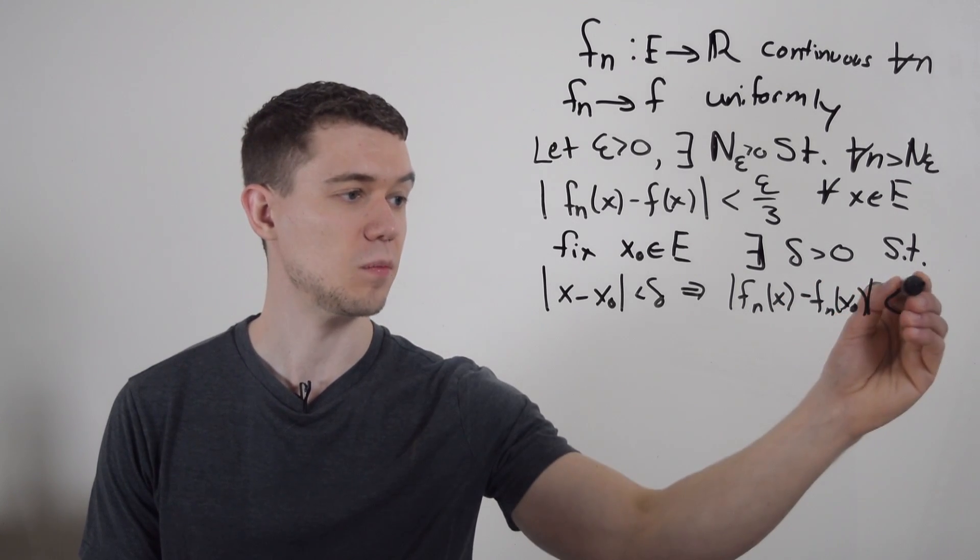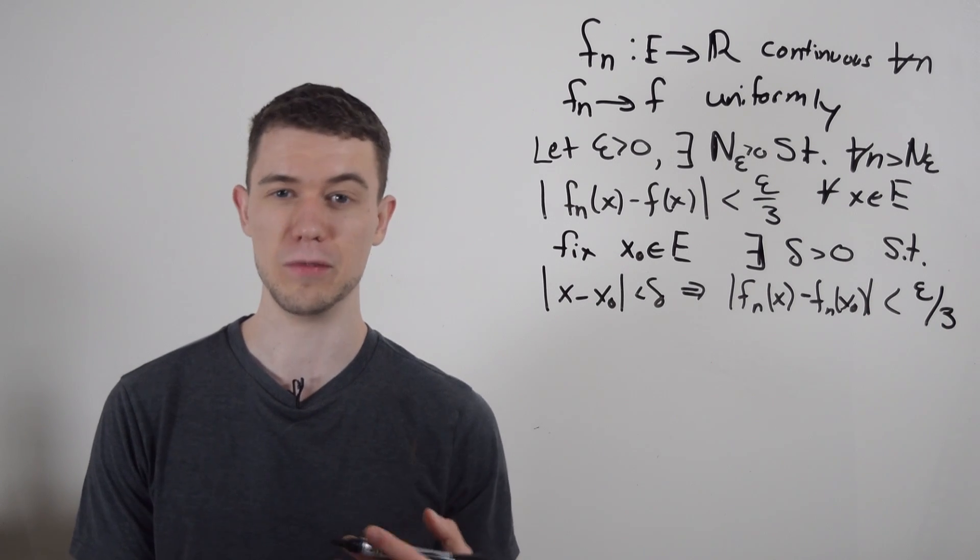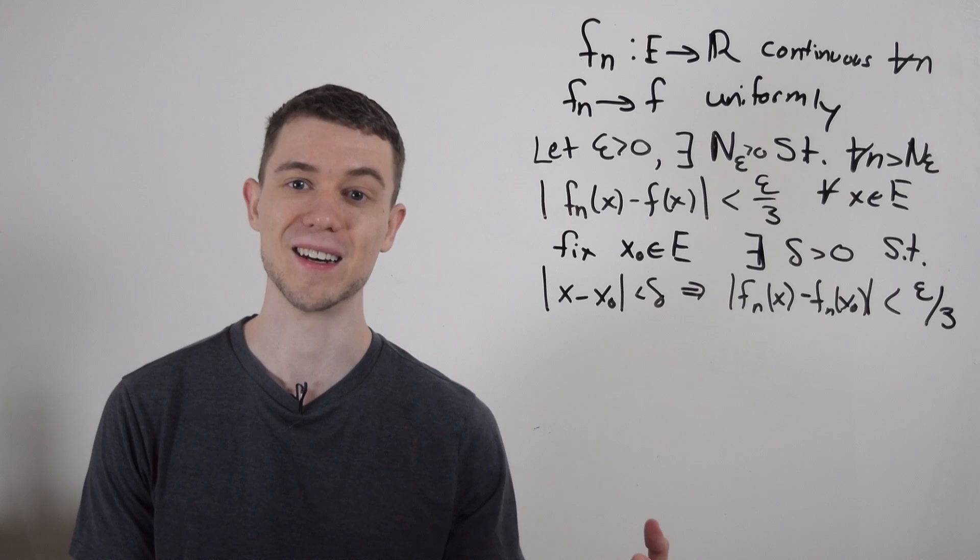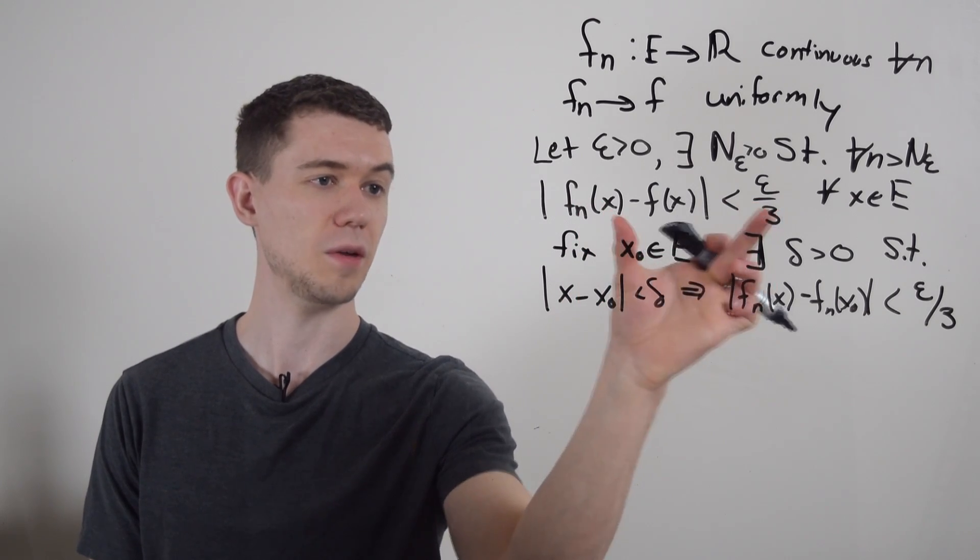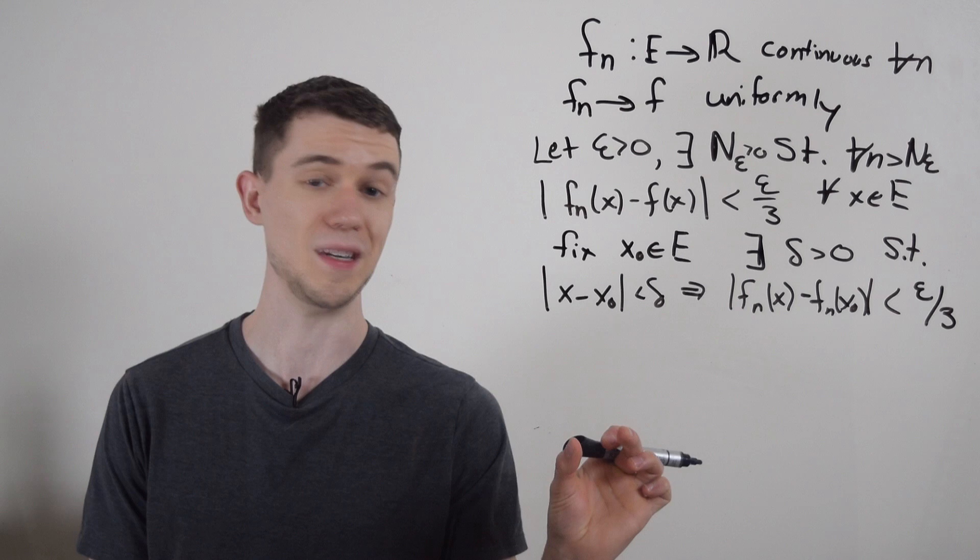And again, for the sake of this proof, since I can make it arbitrarily small, I'll make it less than epsilon over three. And you'll see where these epsilon over three are coming in, in just a second. So here I have the fact of what it means to converge uniformly. Here I have the fact of what it means to be continuous.